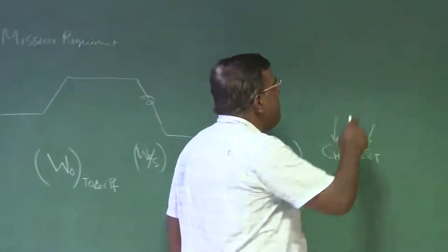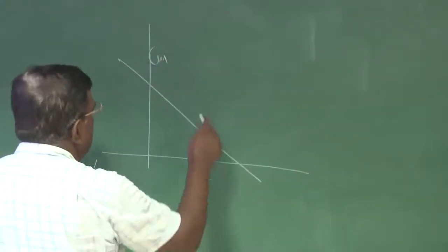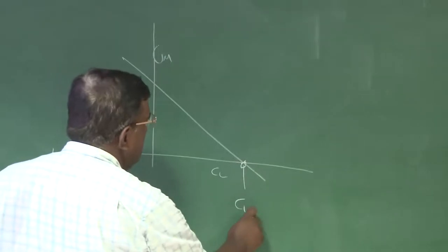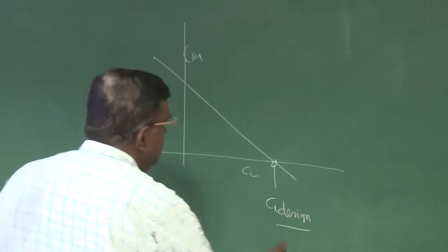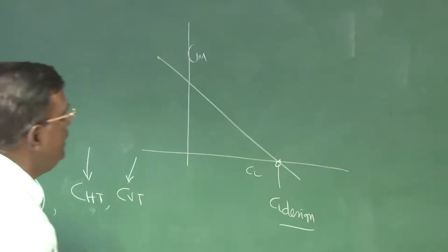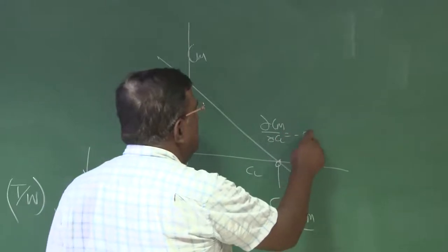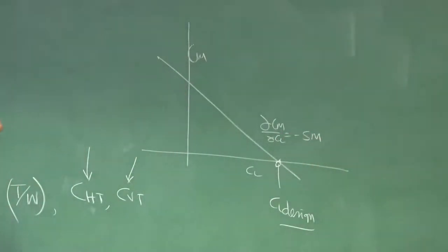But do not forget one thing. We are all designing this airplane when it is CM versus CL, we are designing for a particular CL design. The CL design we are getting as an example, which will meet perhaps the cruise condition if it is a transport airplane. And also we have decided we will design this airplane for a particular static margin, maybe 15%, 10%, 5%, depending upon how you mature in terms of technology and calculation.